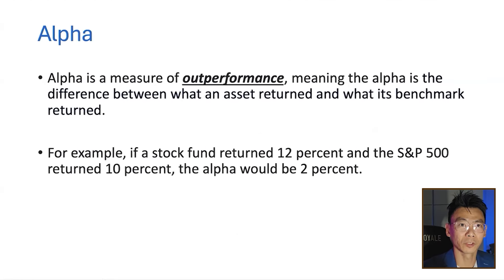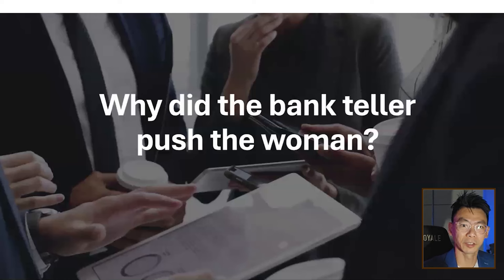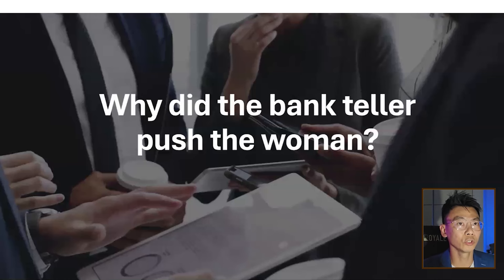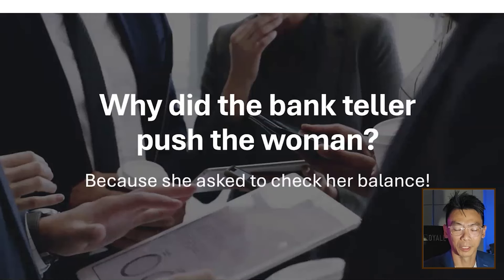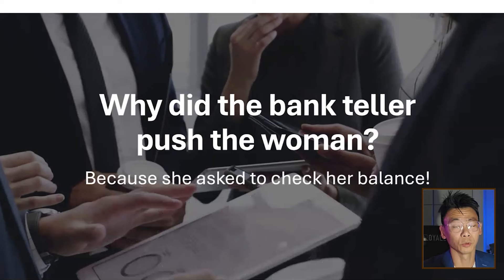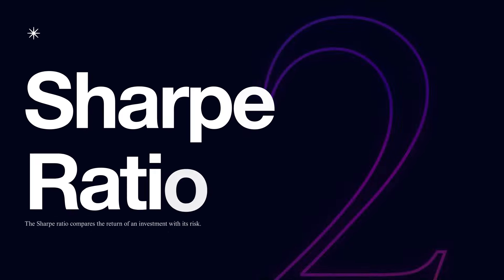Let's move on before some of these funds write negative comments on my video. Here's a joke: why did the bank teller push the woman? Because she asked him to check her balance. Pretty bad joke. Now, besides just looking at alpha, I'd like you to look at the second metric, which is called the Sharpe Ratio.